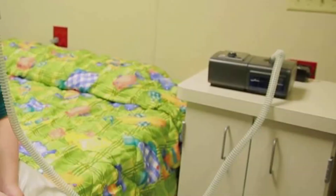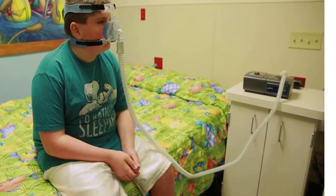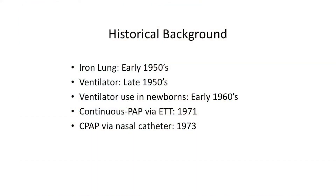We're going to talk about positive airway pressure, which was invented around the 1950s or 60s. The latest form is a very small CPAP machine connected through a hose through a mask to the face. Ventilators were invented in the 1950s, and it wasn't until the 1960s that ventilators were used in newborns. Endotracheal CPAP was used in 1971, and nasal CPAP started in 1973.